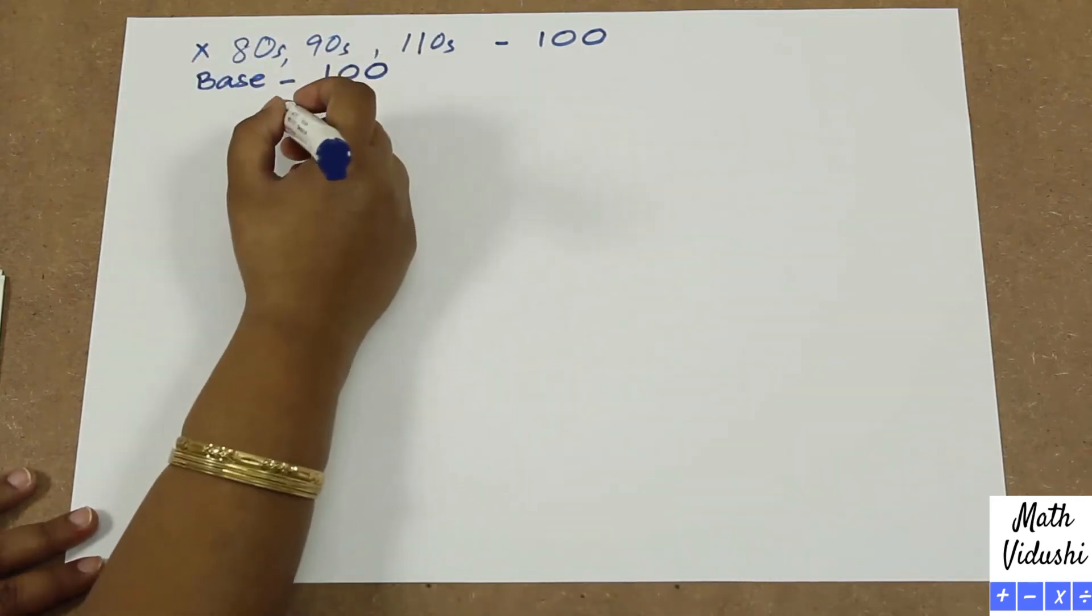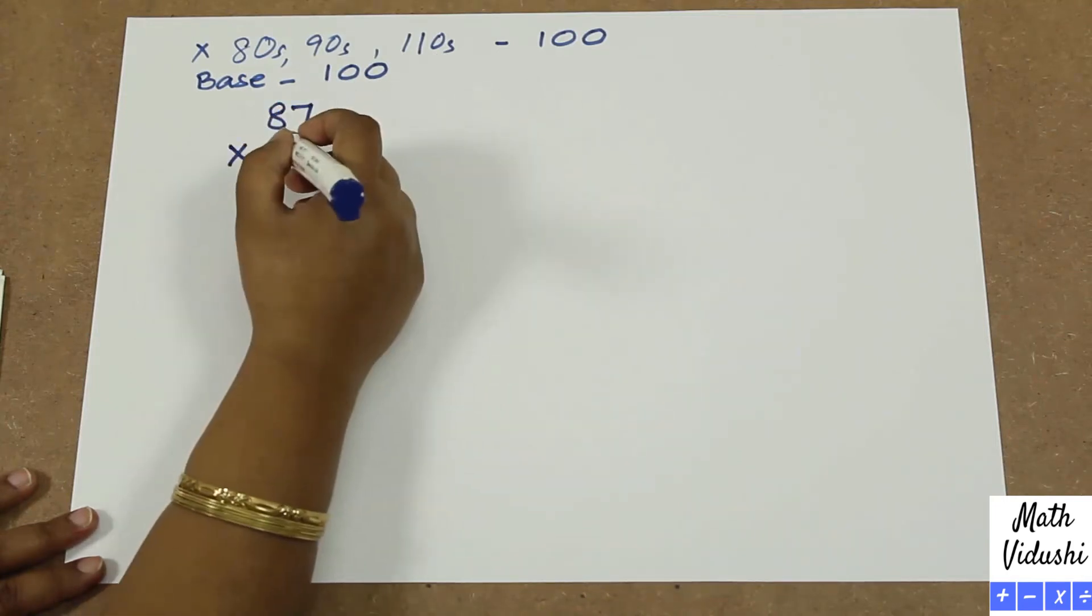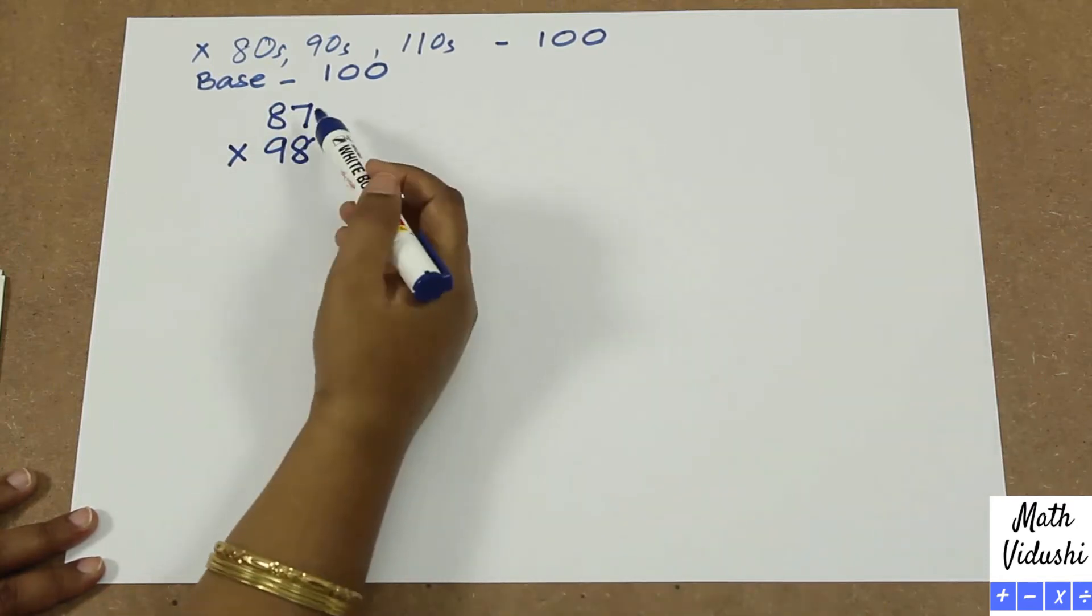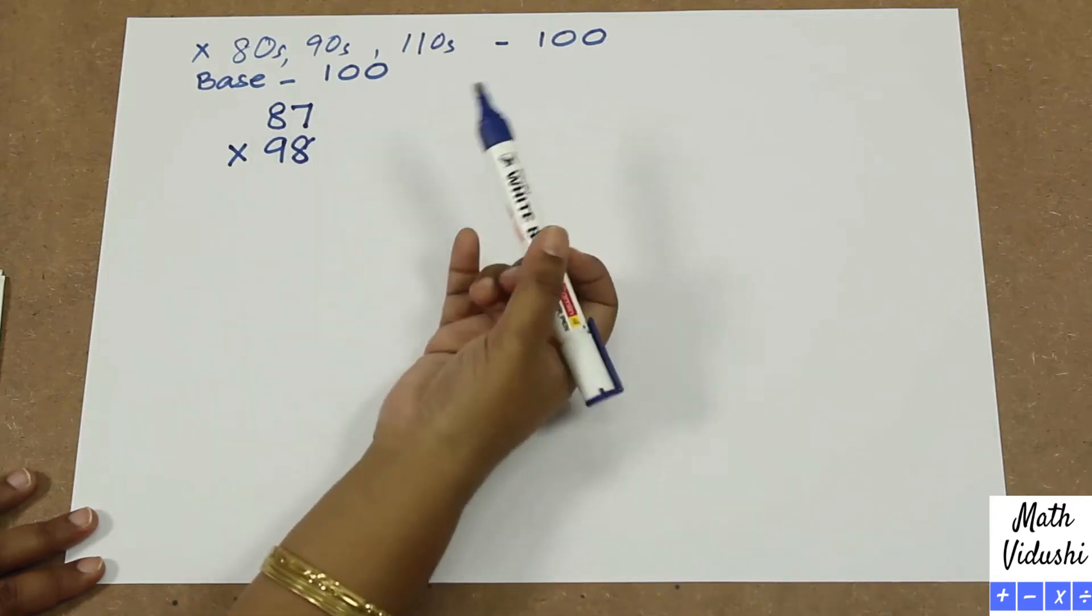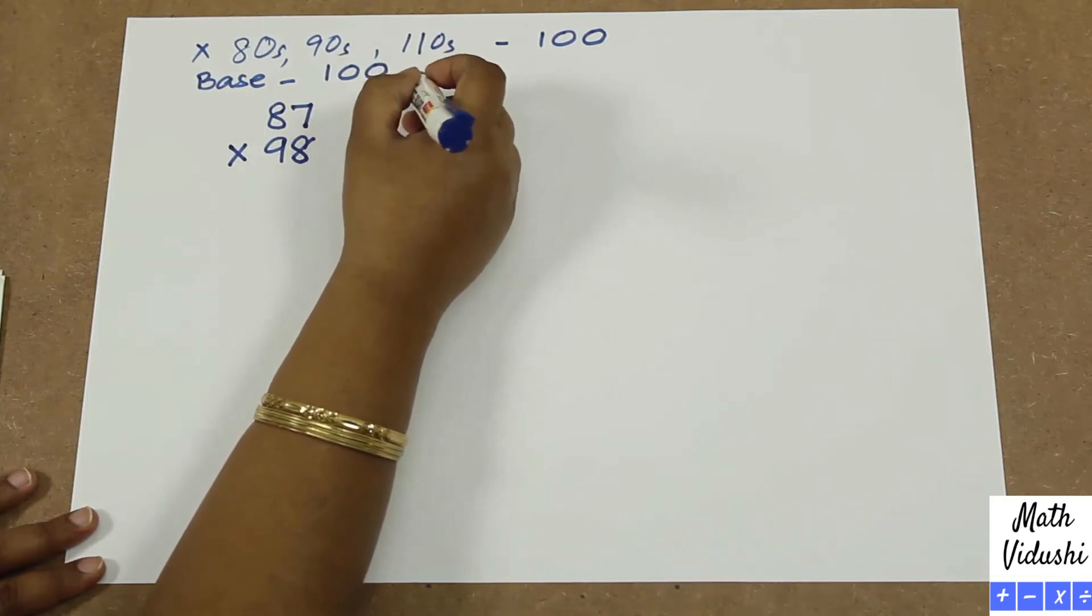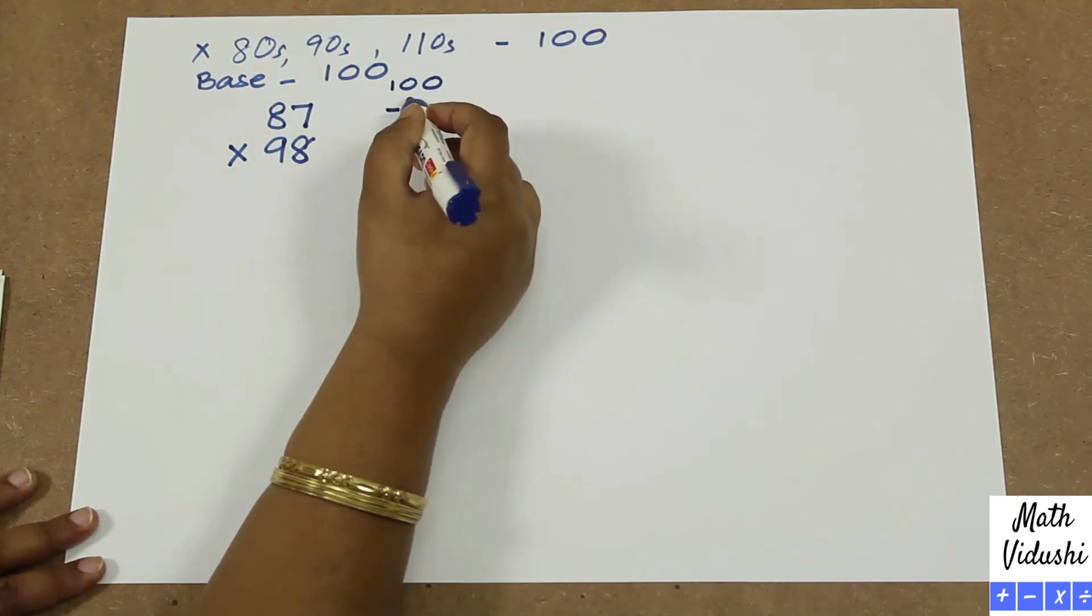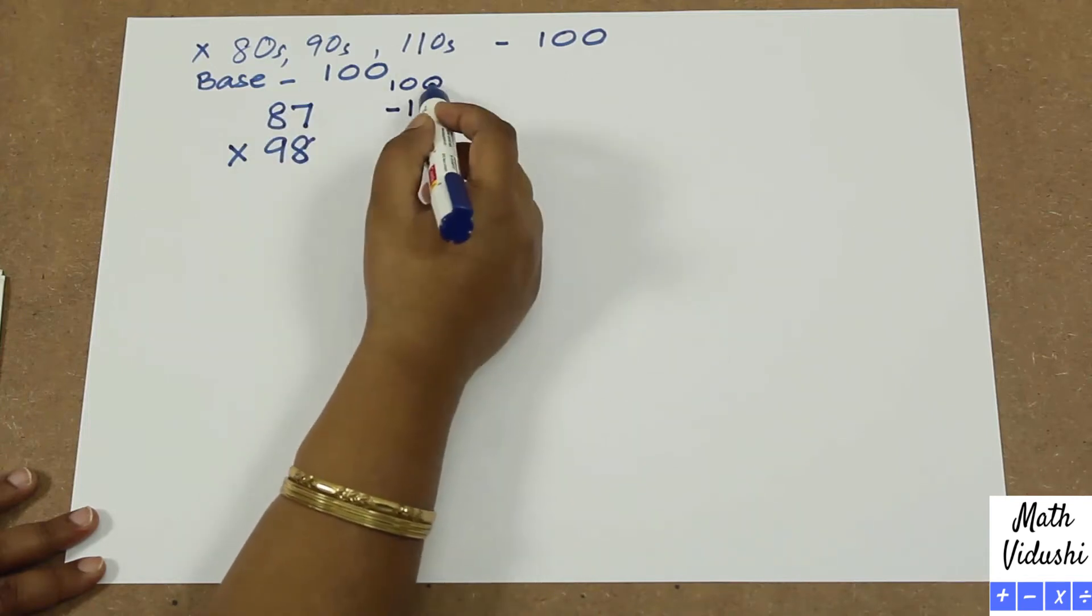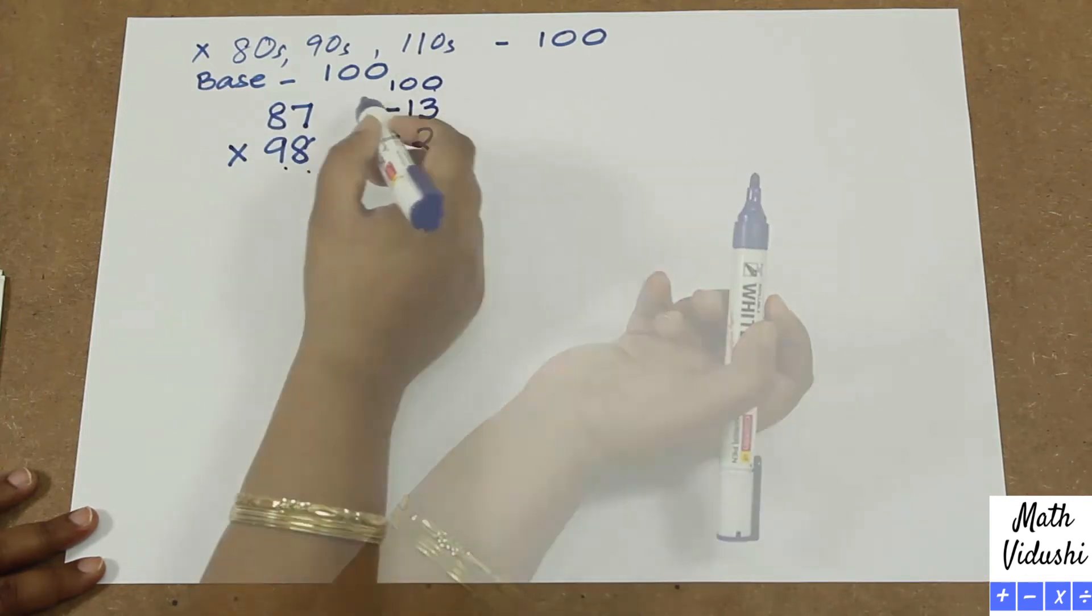For example, you have been given this problem: 87 multiplied by 98. So we realize that 87 and 98 are numbers that are very near 100. So let's take the base hundred and say 87 is 100 minus 13. 100 minus 13 is 87. 100 minus 2 is 98.